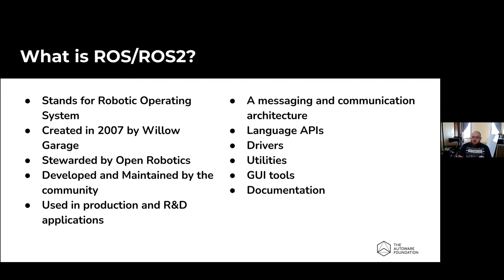In addition to being a messaging and communication architecture, ROS also has language APIs that allow you to access that messaging and communication architecture and send messages back and forth. It includes lots of drivers for many different pieces of hardware that take data from those pieces of hardware and convert them into something ROS can understand. It has a ton of utilities - from command-line tools to query data being sent, look at message structures, gather information about transforms, and create dynamic complex graphs and charts of published data.